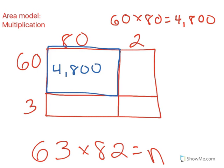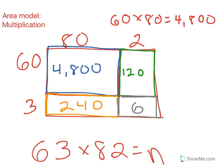The next piece has a width of 60 and a length of 2. 60 times 2 is 120. The third piece has a width of 3 and a length of 80. 3 times 80 is 240. The last piece has a width of 3 and a length of 2. 3 times 2 is 6.